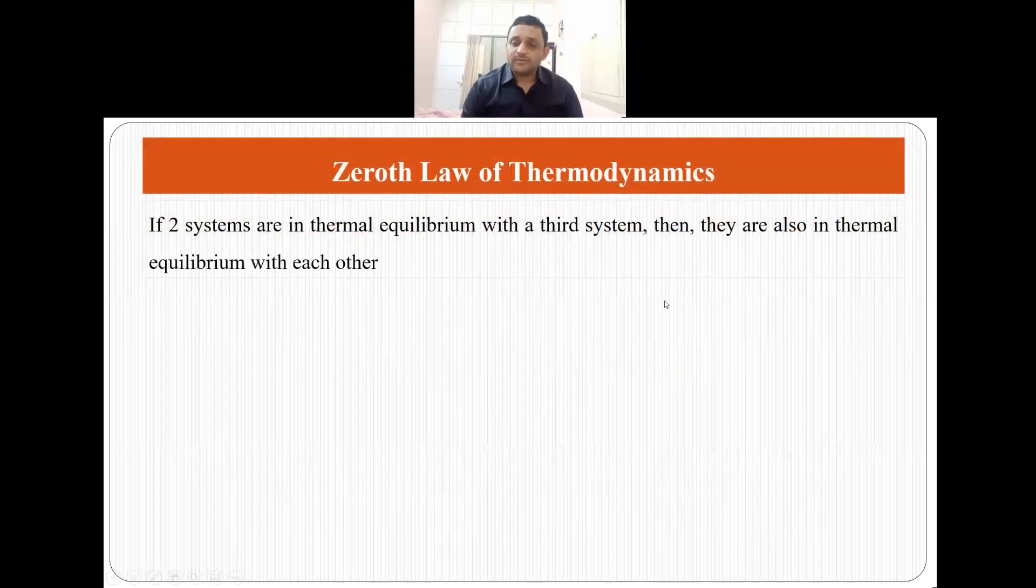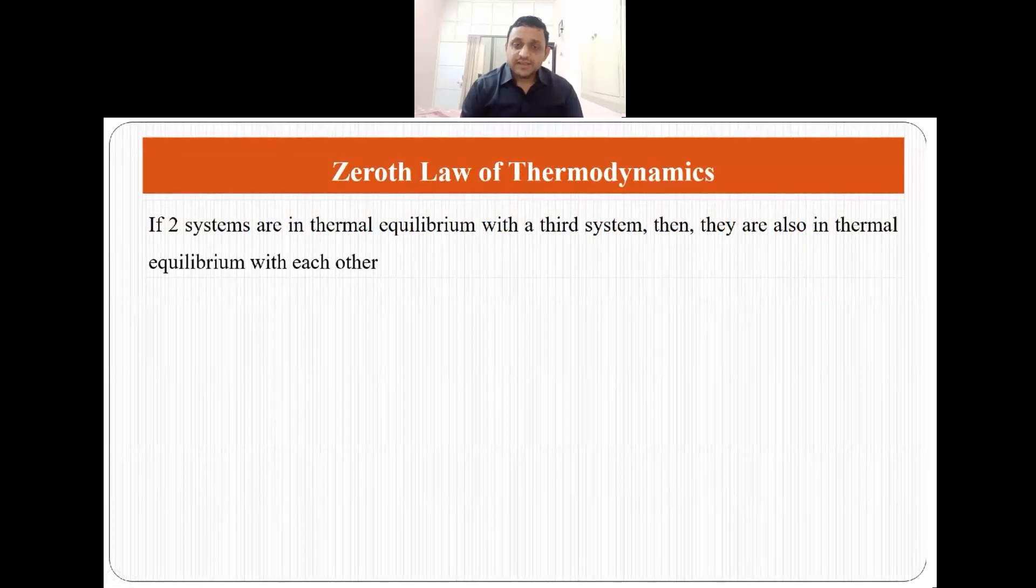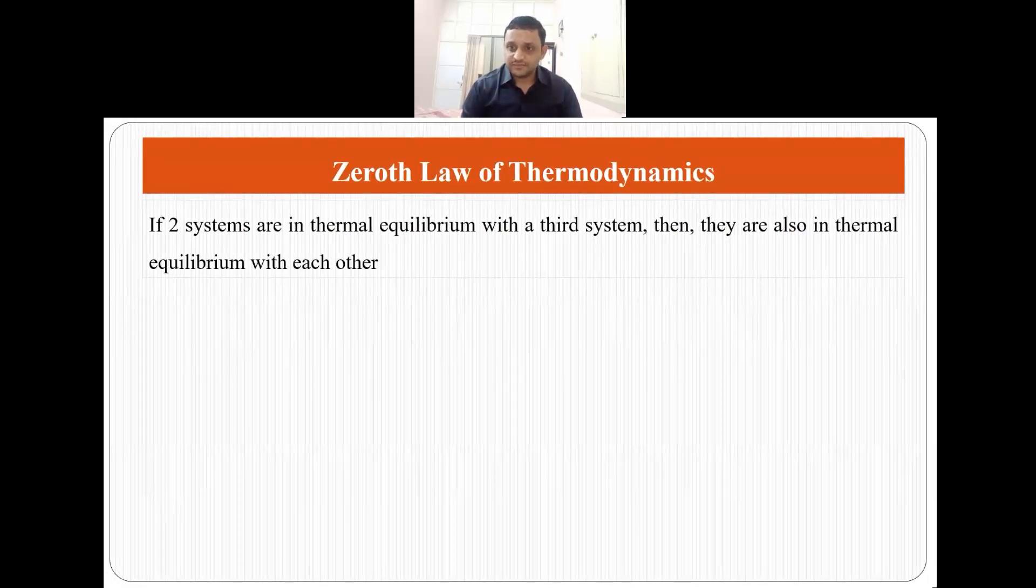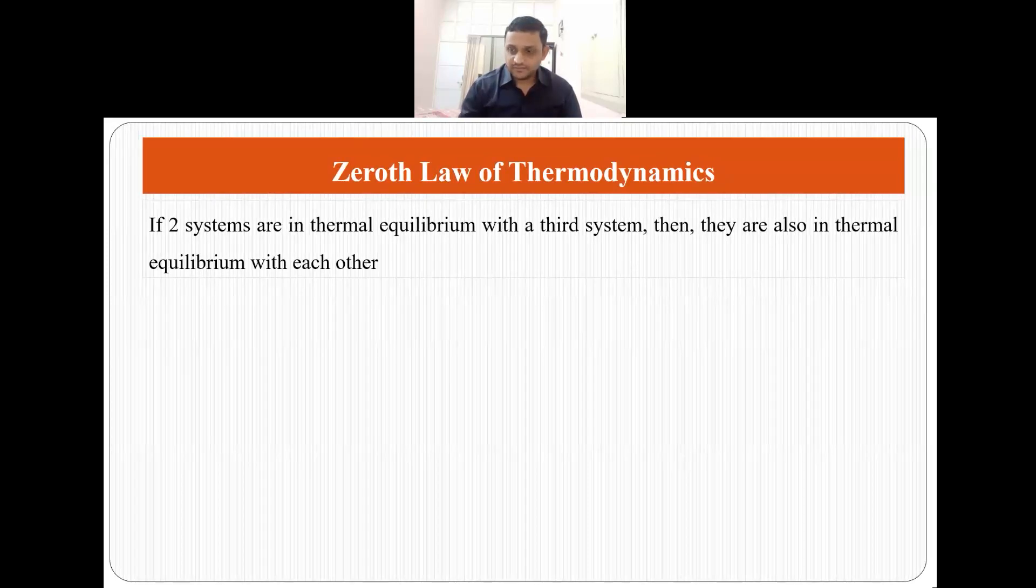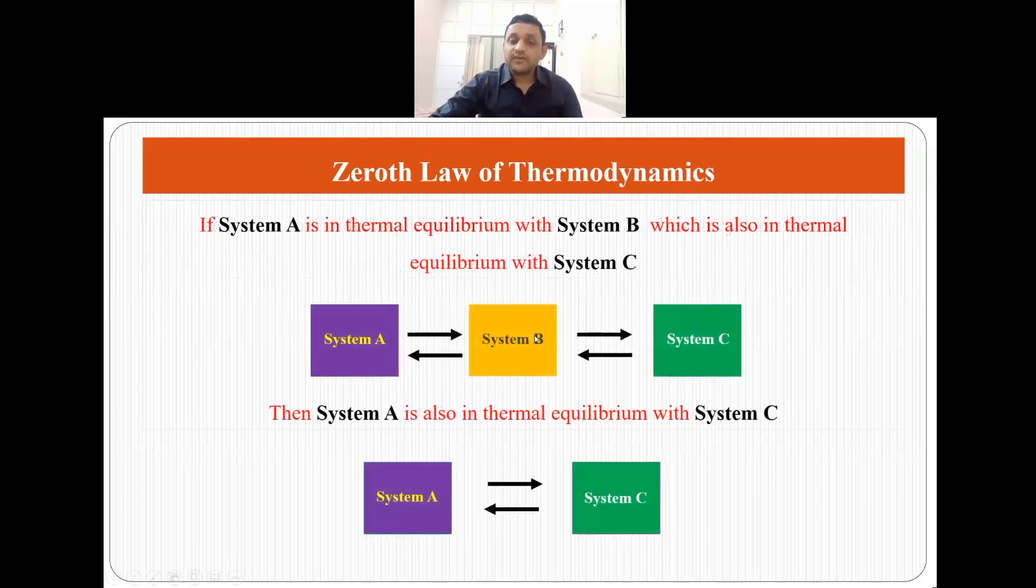The zeroth law of thermodynamics states that if two systems are in thermal equilibrium with the third system, then they are also in thermal equilibrium with each other.